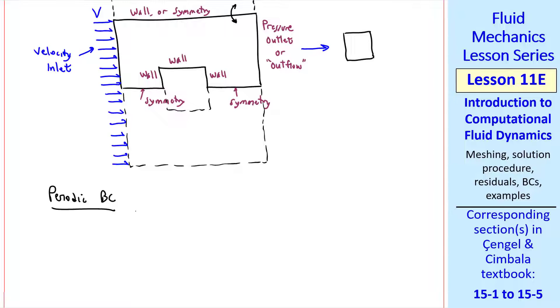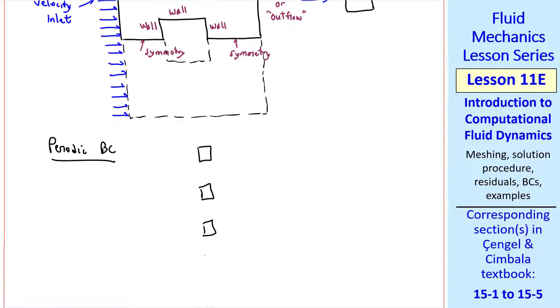You can also specify a periodic boundary condition. Suppose we're modeling flow over an array of these rectangular blocks. We can choose our flow domain as this, with a velocity inlet and a pressure outlet, but we choose these two boundaries as a periodic pair. What that means is that any flow coming out from the bottom has to be the same as the flow coming in, and any flow coming in from the bottom goes out the top. In this way, we can represent and solve for an infinite array of these blocks. This is an example of linear periodicity. You can do a similar thing rotationally.